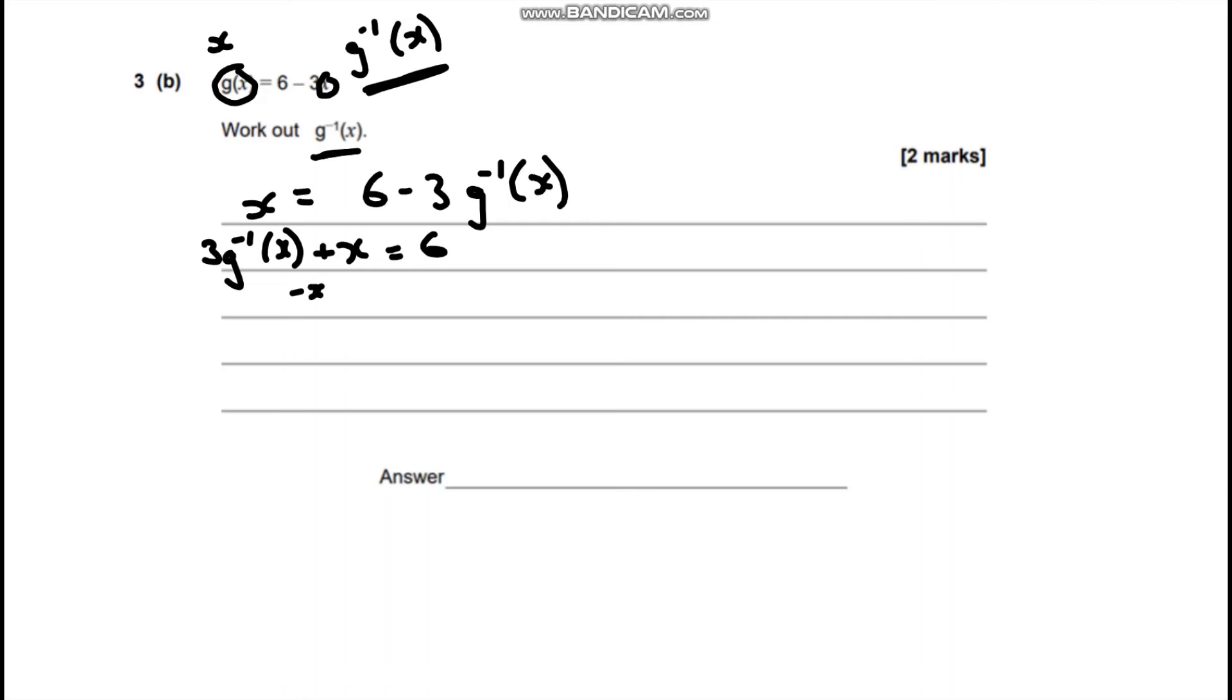I'm going to take away x from both sides. So 3 lots of the inverse function is 6 take away x. And then I'm going to divide by 3. So we're going to end up with the inverse function is 6 take away x over 3.